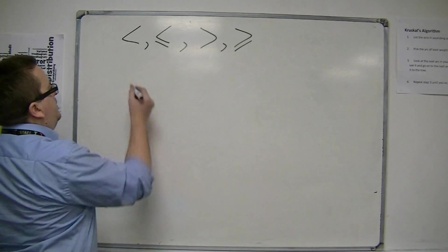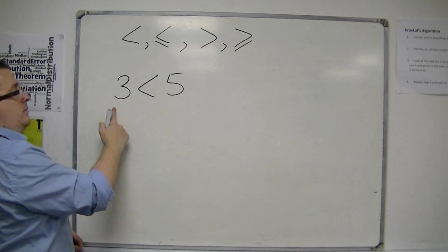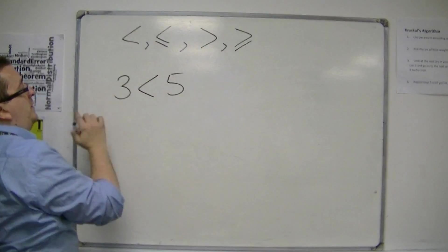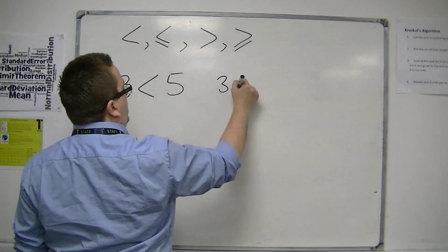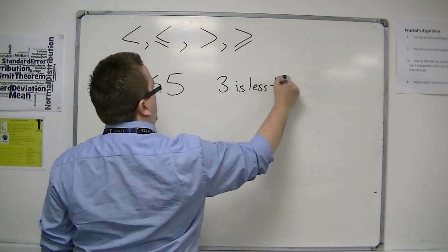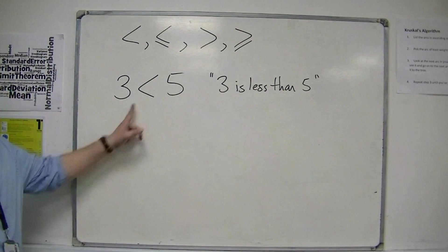So what we can do is we can write something like this. These are the four inequality symbols, and using one of them, what this means is that three is less than five.